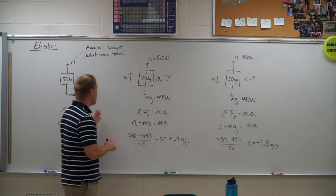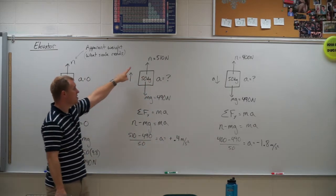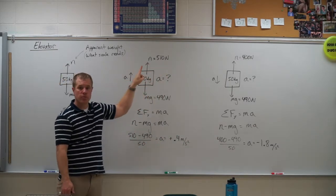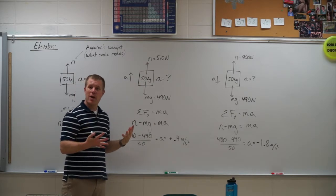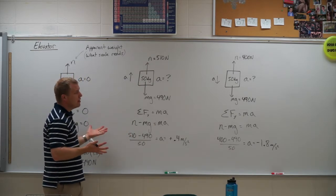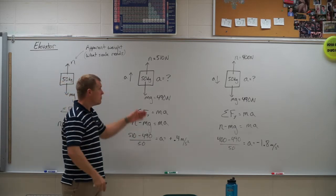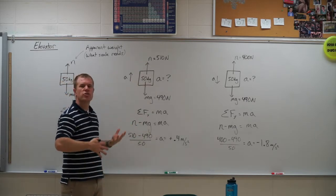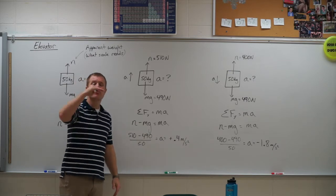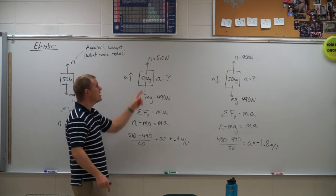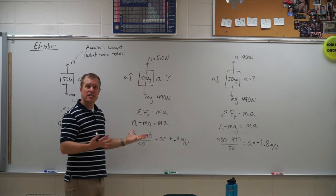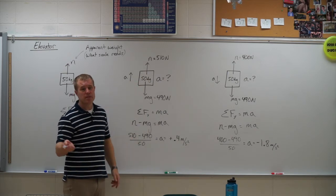So when you get to these elevator problems, the scale is reading that normal force. That's your apparent weight. This would also be a quality of, if you're riding on a roller coaster and you go over the top of a hill, your normal force would represent your apparent weight. If you go over that hill fast enough, it kind of feels like you're weightless. That's because your normal force has gone to zero. And so we're going to do those problems a little later on.